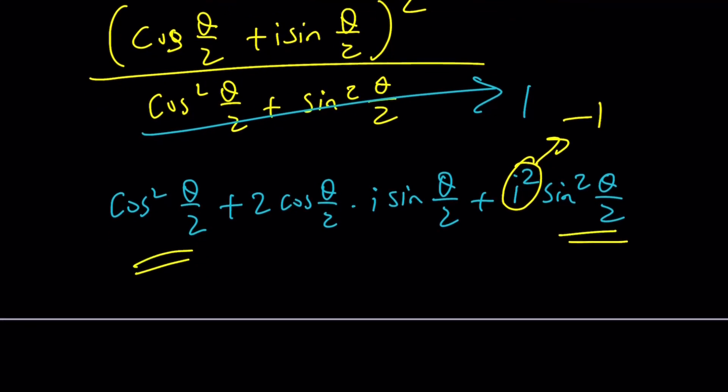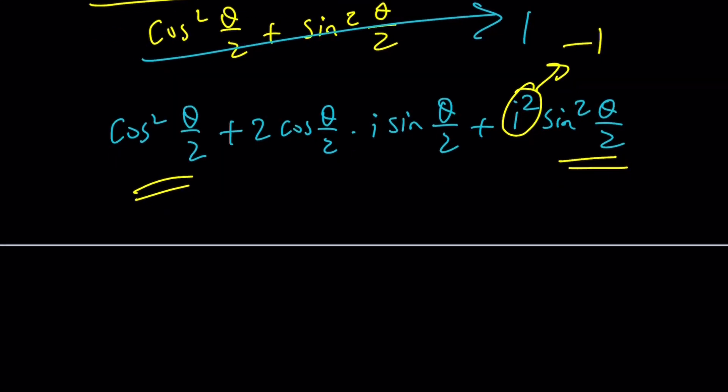What does that remind you? One formula we didn't talk about. Double angle for cosine. So this gives you cosine of 2 times theta over 2, which is cosine theta. And this is the formula for sine 2 alpha. But alpha is theta over 2. So it's going to become i times sine theta.